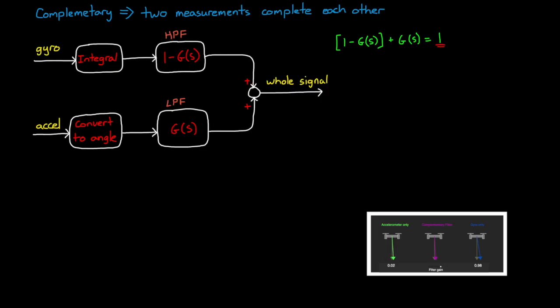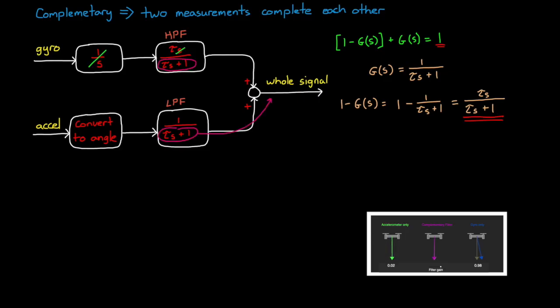We'll use a first order low pass filter for the acceleration, 1 over tau S plus 1. This makes the high pass filter tau S over tau S plus 1. And since the integral is 1 over S, we can cancel out those S's and then factor the low pass filter to after the summing junction.